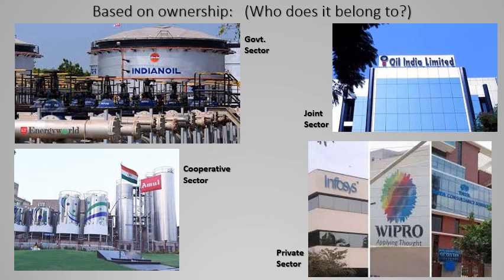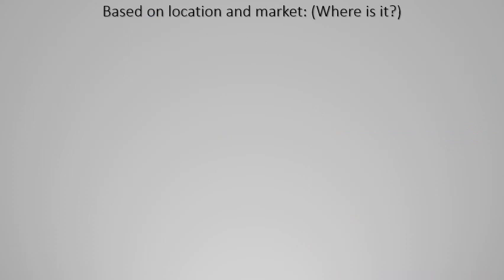An example of the cooperative sector is Amul Dairy in Gujarat, where a group of village people contributed their daily milk — one liter each, and a hundred people together gave a hundred liters. The cooperative was able to make many dairy products and share the profit with all who contributed milk. That is cooperative sector — the most efficient and beneficial form of ownership.